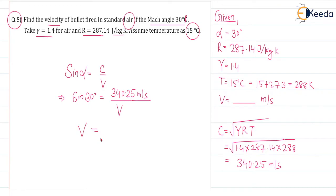We are getting, let me calculate, 340.25 divided by sine 30 degree. I am getting here 680.5 meter per second, correct.